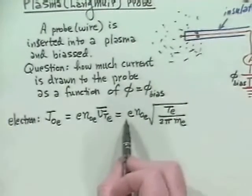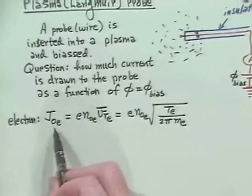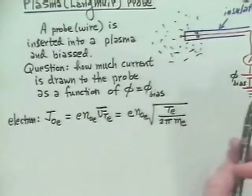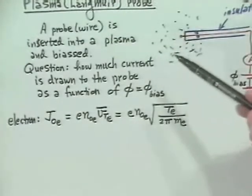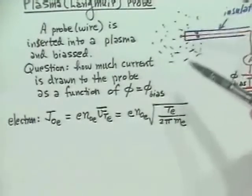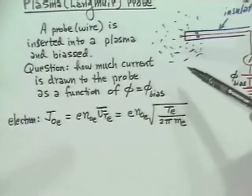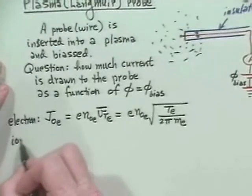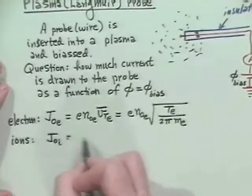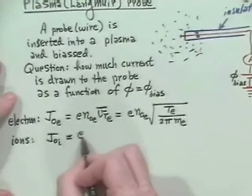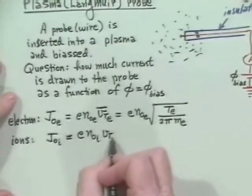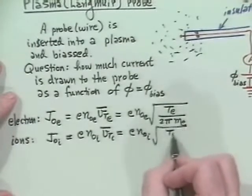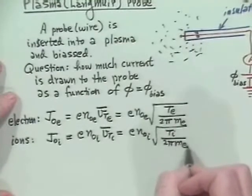Now, by the way, why did I choose, usually a current is Q is minus E, right? But in this case, what we're looking for is the current into the probe, and the electrons, by going there, create the opposite of such a current. Anyway, by convention, you choose this to be the positive current, whereas for the ions, we have the same current, except with the ion thermal velocity, so it's E, N-naught-e, V-thermal-e. And so this would be E, N-naught-e, square root of Te over 2 pi Mi.